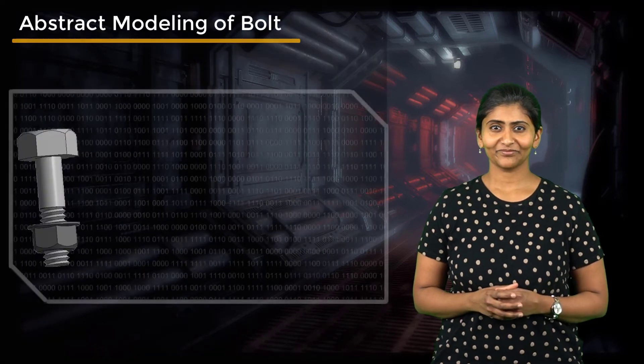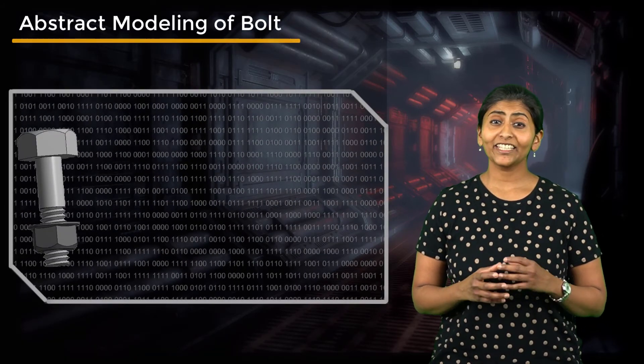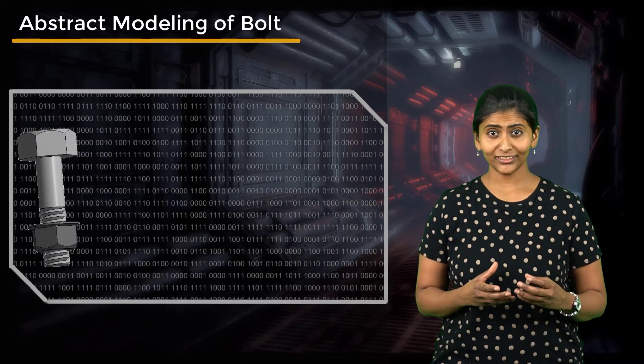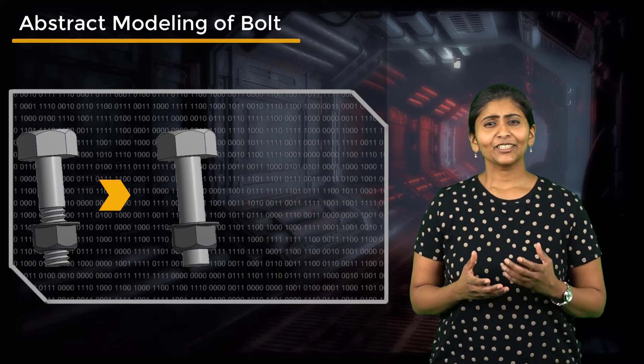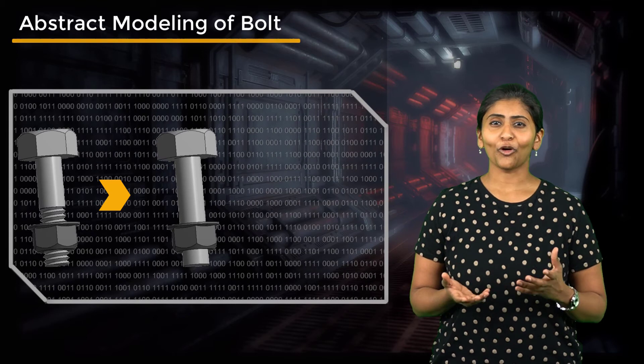To understand these modeling choices in practice, let's look at a few simple cases here. A bolt may be simplified by replacing its threaded portion with a cylinder since we generally don't need to model the threads.